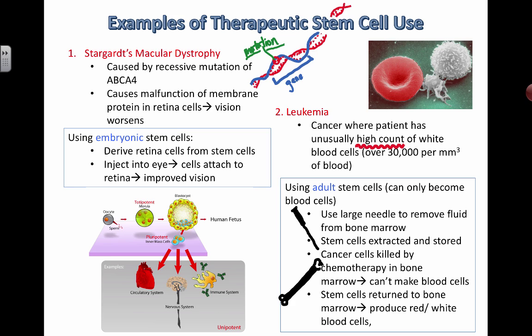Notice one last important thing: for these two treatments, we're using stem cells to produce new healthy cells — we're not going in to address the mutations themselves. That's a whole other realm of potential treatments. We're not actually fixing the mutation; we're putting in cells that don't have the mutation and hoping they can overcome the problems caused by the cells that did. This is different from genetic engineering, where you'd go in and snip DNA to remove or replace missing or incorrect alleles. Make sure you can distinguish between these two types of treatments.